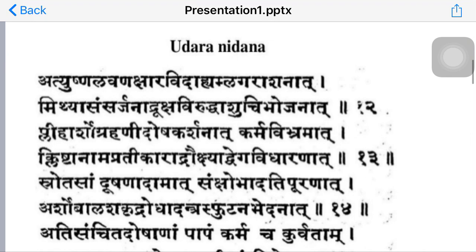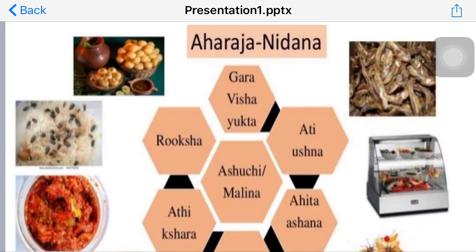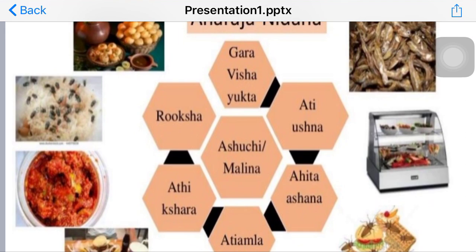Coming to Nidana of Udhar-roga, it is classified in this manner. Aharaj Nidana includes: Gar-vish-yukta Bhojan — diet mixed with toxins; Ati Ushna — hot diet; Ahit Ahar — diet which is not suitable for the body; Asuchi Malin Bhojan — unclean/stale food; Rooksha diet — diet without oil substance; Ati Kshar — excessively alkaline food; and Ati Amla — excessively sour food.